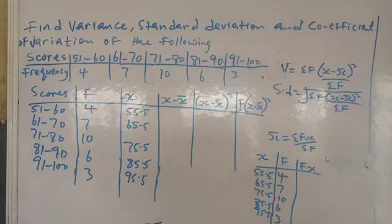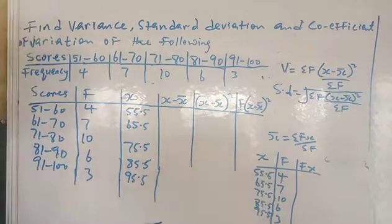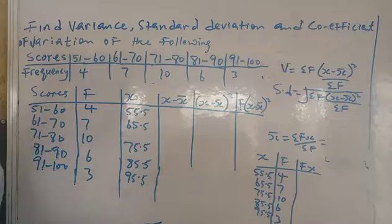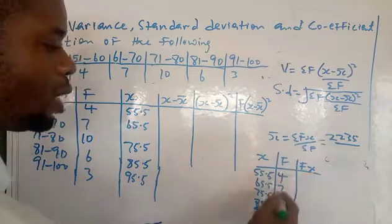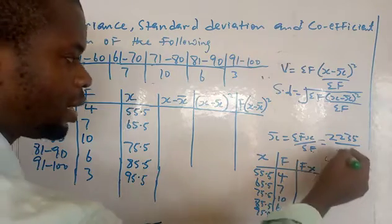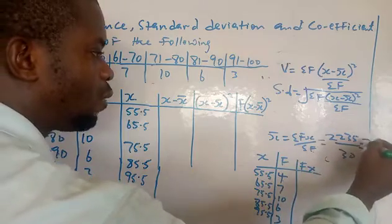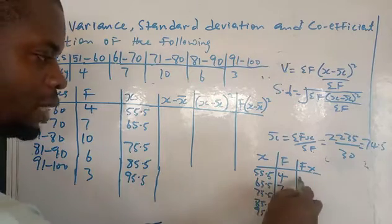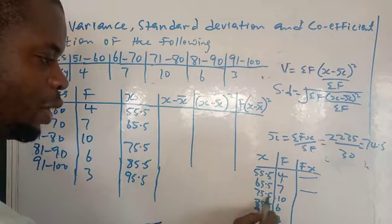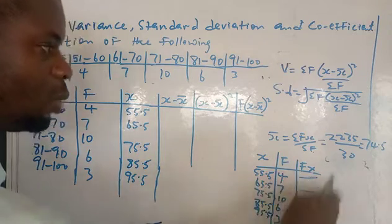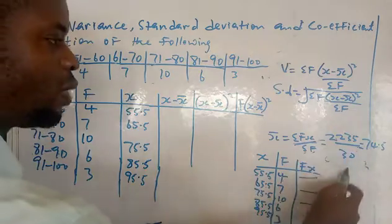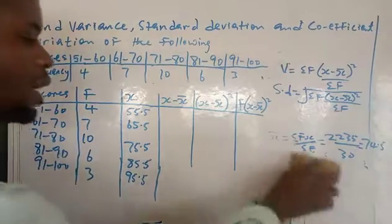If you do it correctly, when you multiply each x by its corresponding frequency and sum them all, the total is 2235. Summation f is 30. So dividing 2235 by 30 gives you 74.5. That is the arithmetic mean — 74.5.